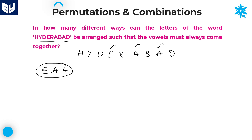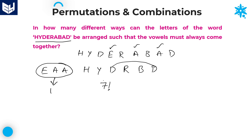Write down the remaining letters: H, Y, D, R, B, D. These are the remaining 6 letters. We need to take the three vowels as a single entity, giving 6 letters plus 1 single entity = 7 total. These 7 letters can be arranged in 7 factorial ways. But the letter D is repeated twice, so divide by 2 factorial.